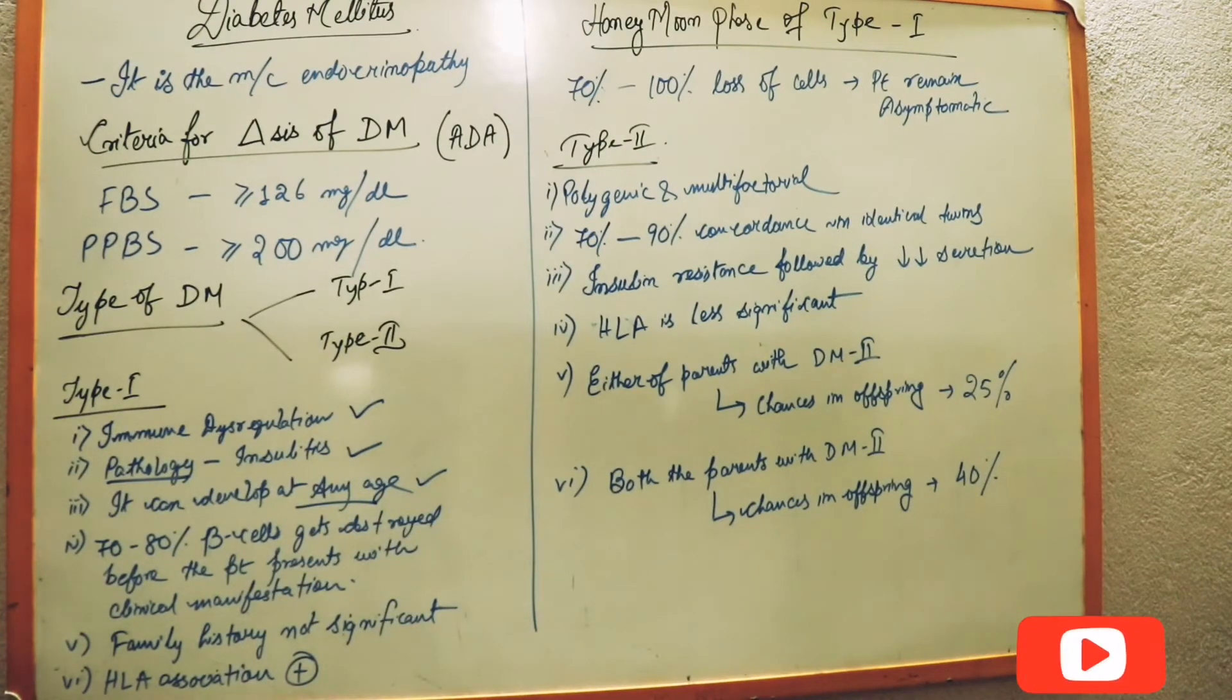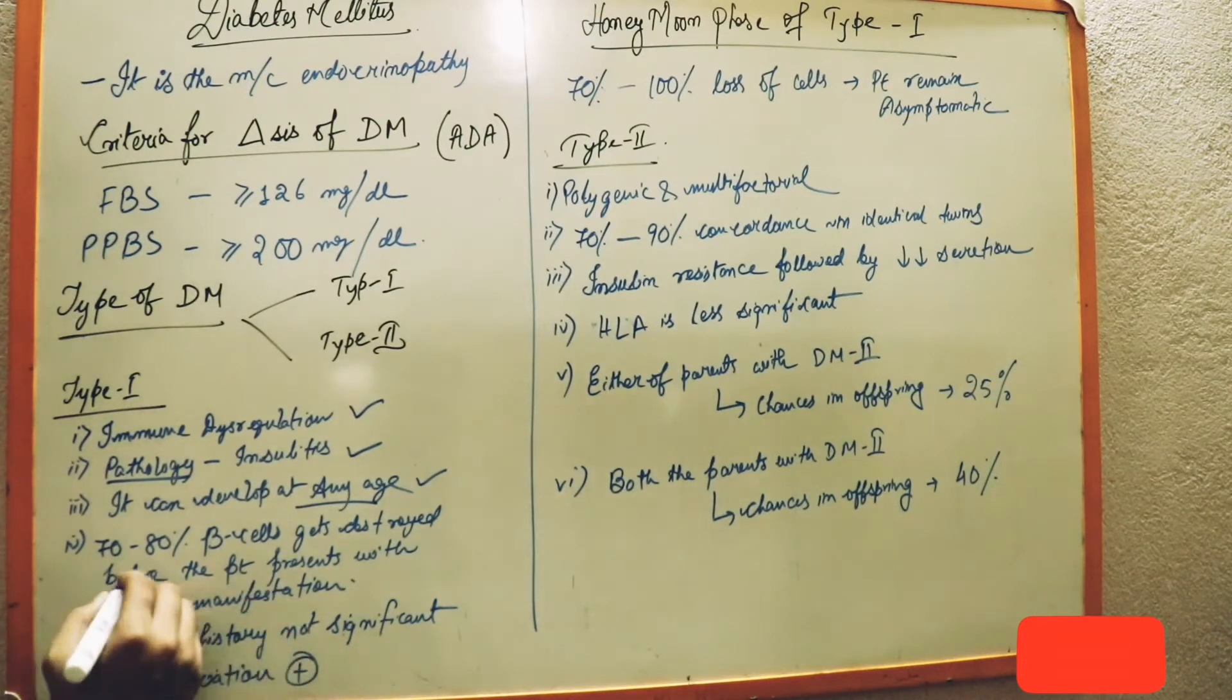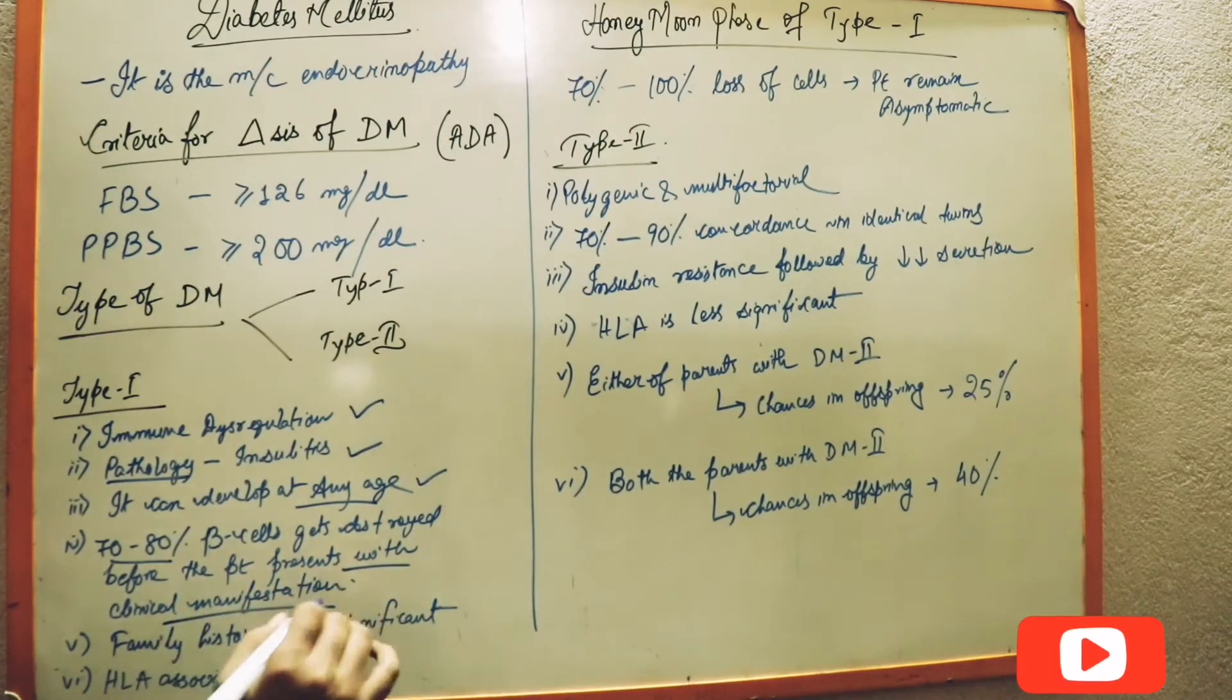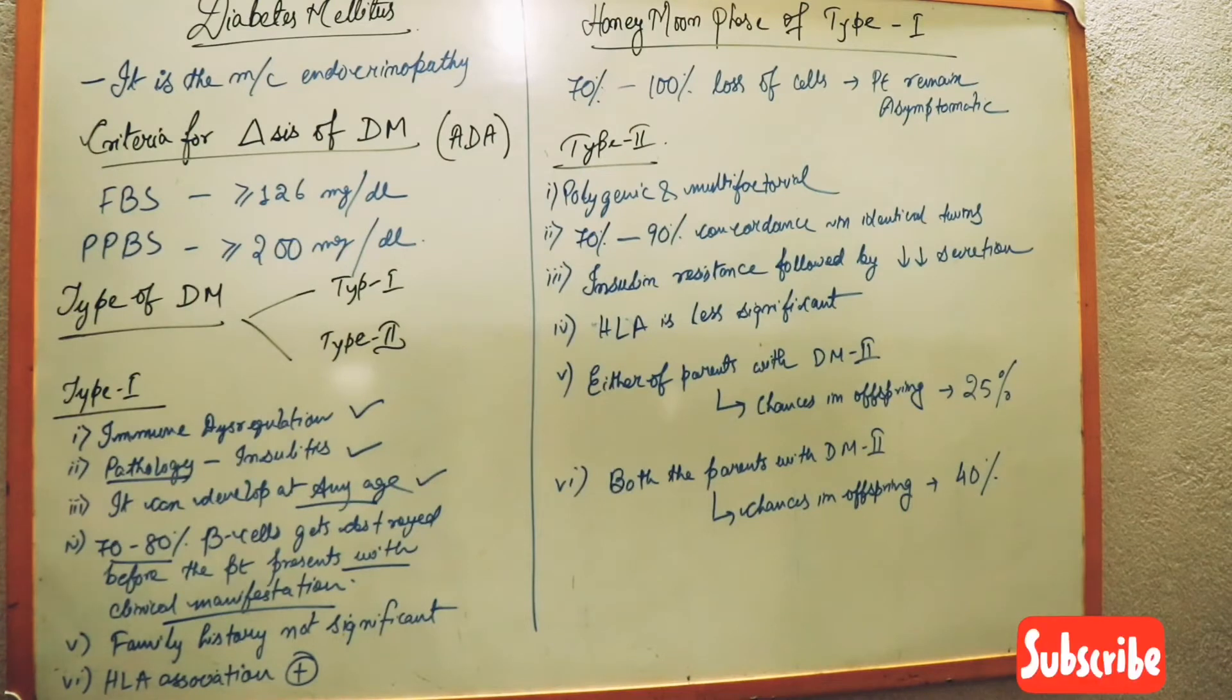Now 70 to 80 percent of the beta cells can get destroyed before a patient comes to the OPD and presents with some clinical manifestations.